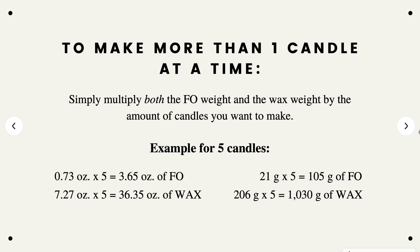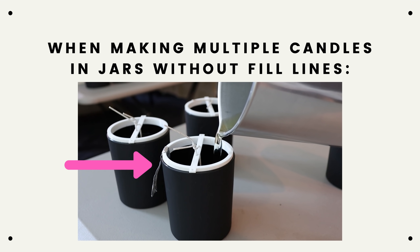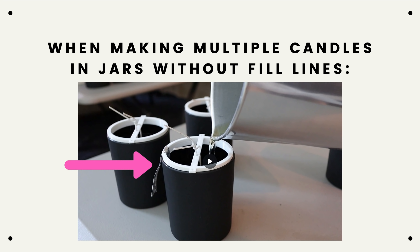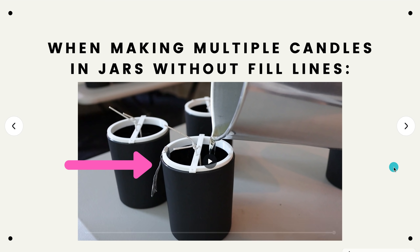If you're looking to make more than one candle at a time using this formula, all you have to do is multiply both the fragrance oil weight and the wax weight by the number of candles you want to make. For example, if you want to make five candles, just multiply both numbers by five. If you're using jars without fill lines, you'll need some indication of how high to fill up your candle — I use a little piece of folded aluminum foil as a mold after pouring the first candle so I know how high to fill the rest.